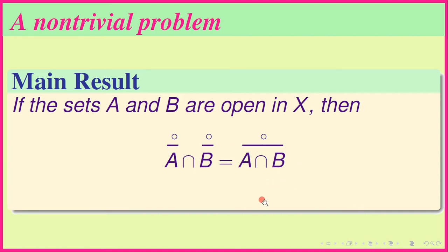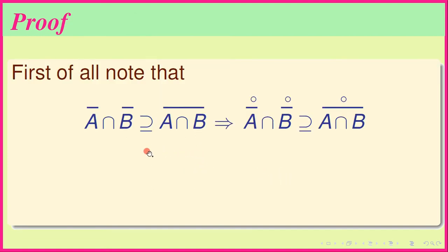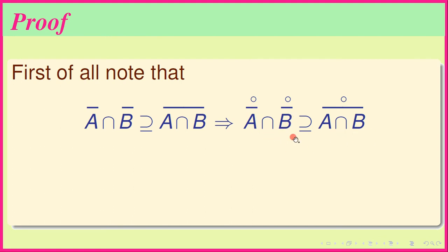One direction is trivial: the left-hand side clearly contains the right-hand side. Since Ā ∩ B̄ contains (A ∩ B)̄, taking interiors of both sides and using the fact that interior respects intersection gives (Ā)° ∩ (B̄)° ⊇ (A ∩ B)̄°.